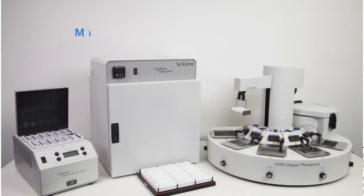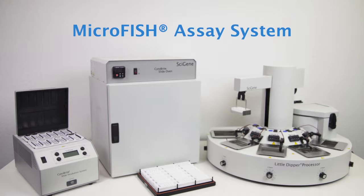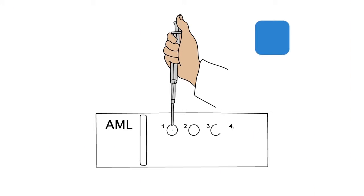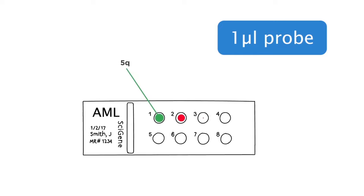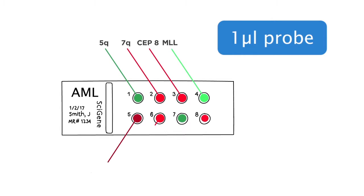Fortunately, there's a better way. The Microfish Assay System from Cygene. It condenses an entire fish panel of up to eight probes onto a single slide using just one microliter of sample and probe per hybridization.